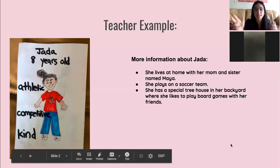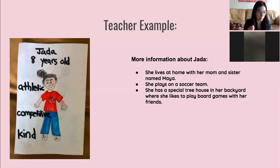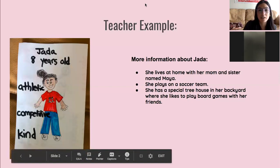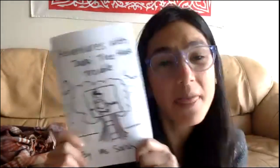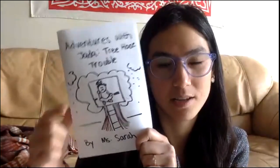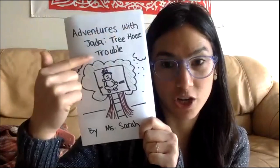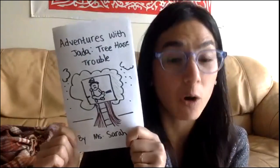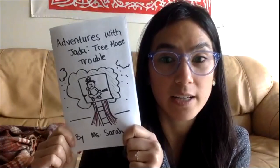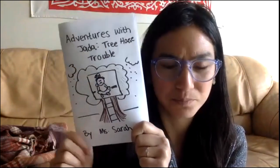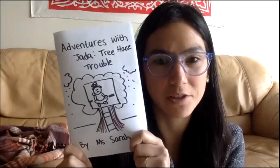So the next step is to take these details and put them onto paper. Miss Sarah has already started an adventure series story, and this time I want that adventure to take place in Jada's tree house. My series is called Adventures with Jada, because that's my character that I can write about over and over again. And this story is called Tree House Trouble. I've already started writing the first few pages of this new adventure.